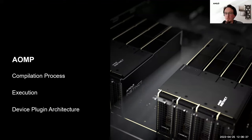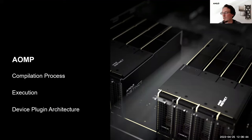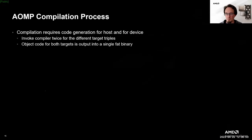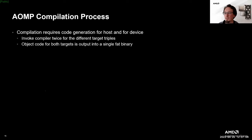Now that we're somewhat familiar with the ROCm software stack and how to obtain and build the AOMP compiler, let's look into the compilation process, device plugin architecture, and how an actual OpenMP target offload program executes on the device. The compilation process requires code generation for both the host and the device, so the compiler is invoked twice for different LLVM target triplets.